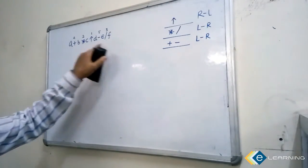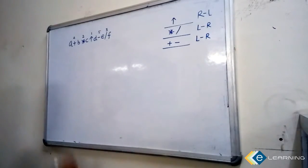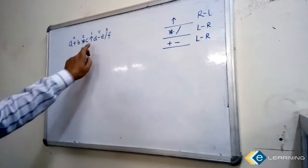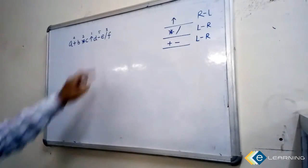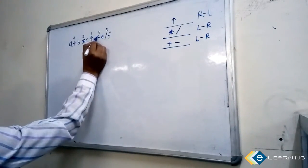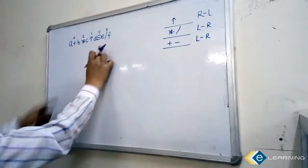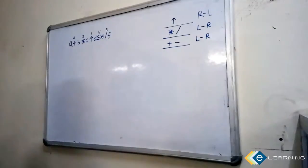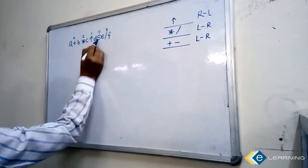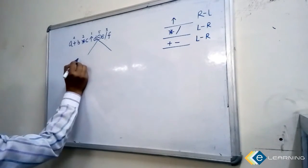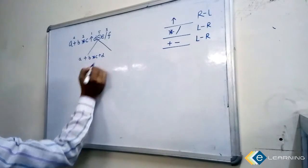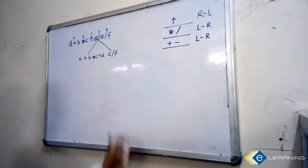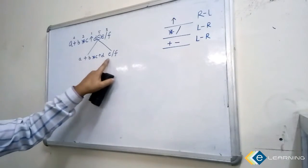After numbering all the operators according to their precedence, find out which operator is evaluating last. The power operator evaluates first, but the minus operator evaluates last. The operator that evaluates last — make it the root, and divide this expression into two valid sub-expressions: the first is A plus B star C power D, and the second sub-expression is E divided by F.